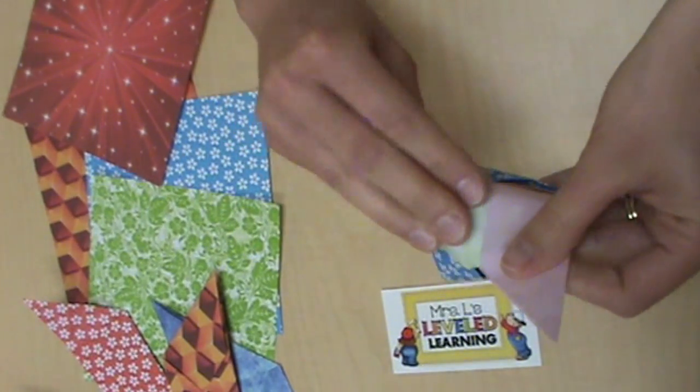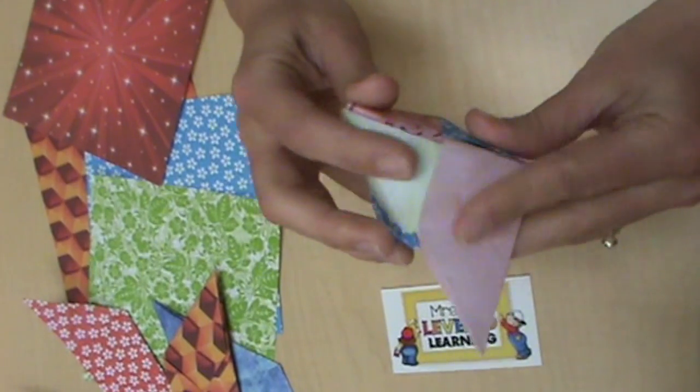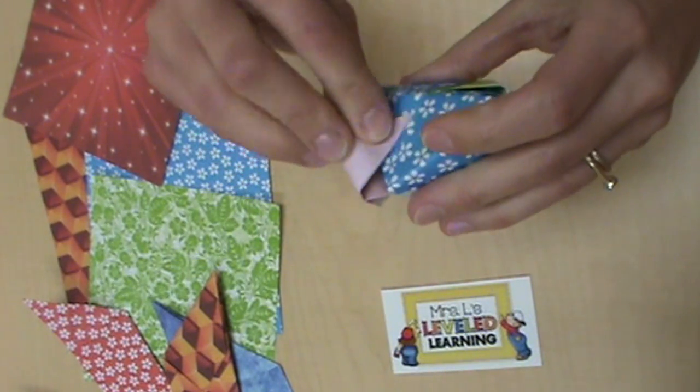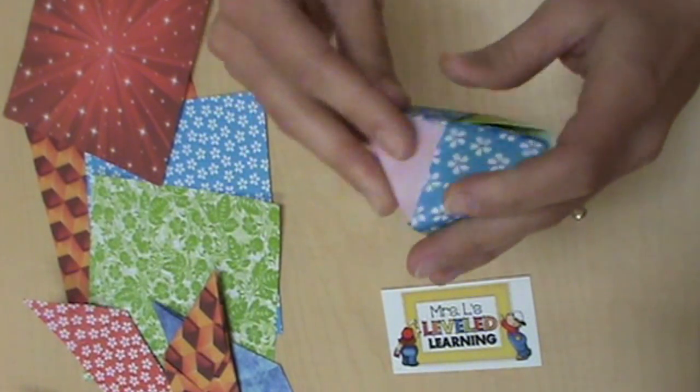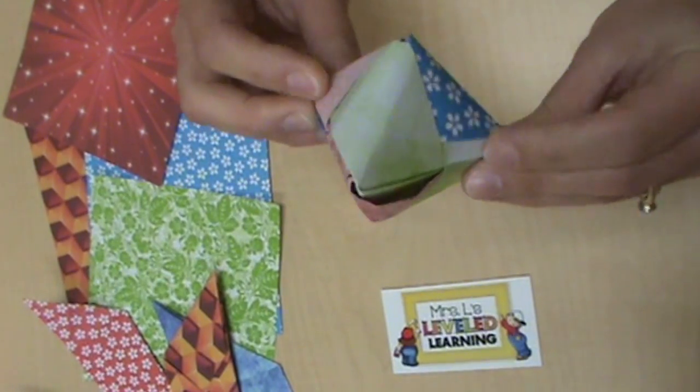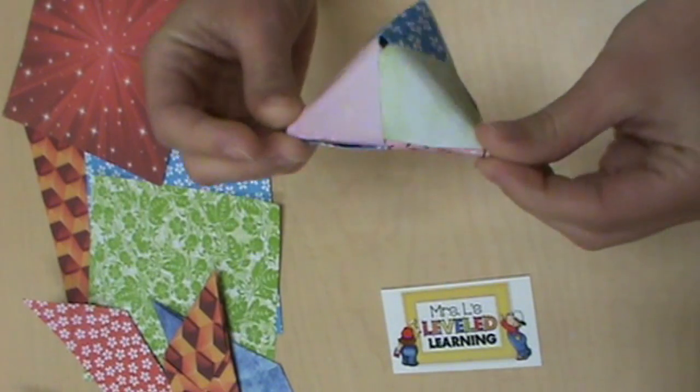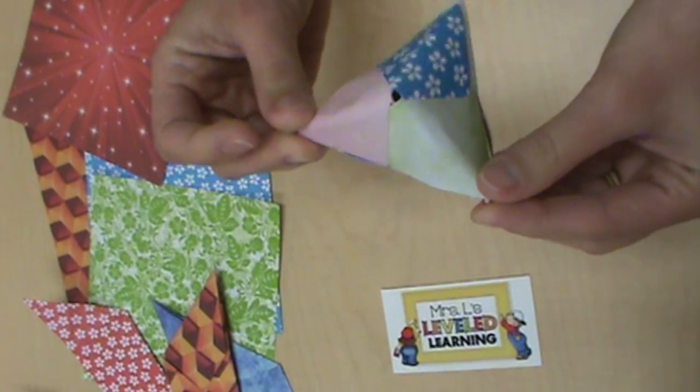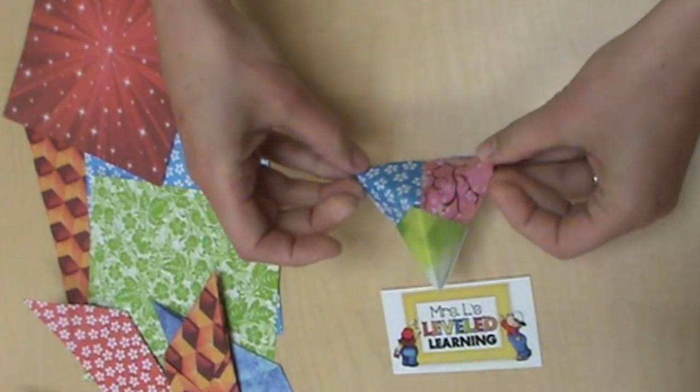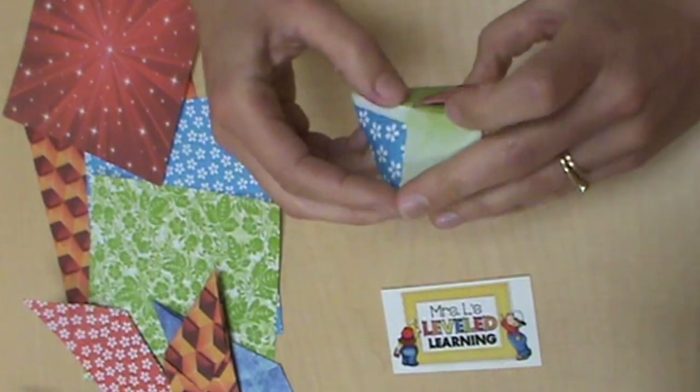Each triangle goes into another pocket to complete the shape. This is called the hexahedron because there are six flat faces. Now you have three people joined as a team.